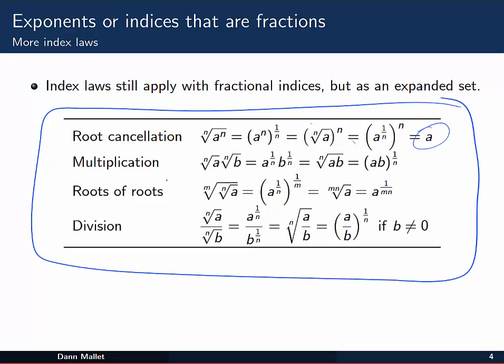Now multiplication, this is the same as the regular index law, but just rewritten in a different way with fractional indices. If we've got the nth root of a and the nth root of b, it can be written as the nth root of a times b. Or if you like, the 1 on n power of a times b. And roots of roots, this is like powers of powers. The nth root of the mth root of a, well you can write it in power form, multiply them through, and you end up with a to the 1 on mn.